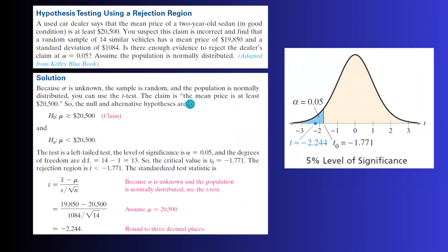The claim is the mean price is at least equal or more than $20,500. So the null hypothesis is given to you. We can easily construct the alternative hypothesis, which says the population mean should be less than $20,500. So you have a left-tail test.